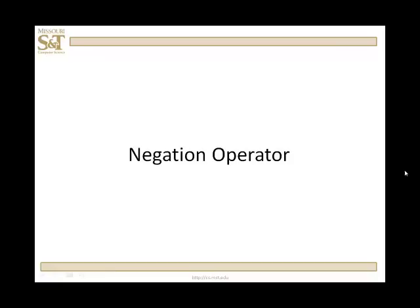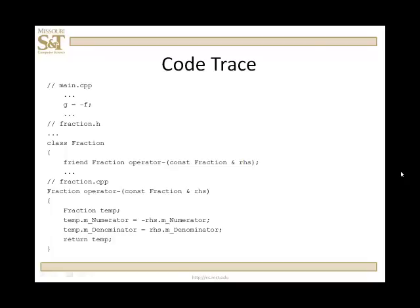Let's take a look at negation first, and again we're going to do this for the fraction class. I'm going to set g to be the negative of f. The implication here is that this operator is not going to change the operand — that is to say, it's not going to change f. Since I'm going to declare this as a non-member function, not scoped as fraction, and declared as a friend — so this is a global function — being unary it has one parameter, and hence f is the operand passed into that one parameter. I'm going to make it a const, so it does not change its operand.